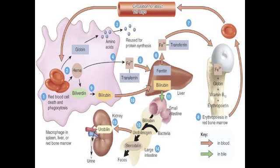In step 8, erythropoiesis in the red bone marrow results in the production of red blood cells, which enter the circulation. In step 9, when iron is removed from the heme, the non-iron portion of heme is converted into biliverdin (a green pigment) and then into bilirubin (a yellow-orange pigment). In step 10, bilirubin enters the blood and is transported to the liver. Step 11: within the liver, bilirubin is released into the bile, which passes into the small intestine and then into the large intestine. In step 12, bacteria in the large intestine convert bilirubin into urobilinogen. In step 13, some urobilinogen is absorbed back into the blood and converted to a yellow pigment called urobilin, which is excreted in the urine. In step 14, most urobilinogen is eliminated in feces in the form of a brown pigment called stercobilin, which gives feces its characteristic color.